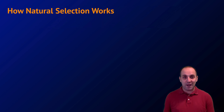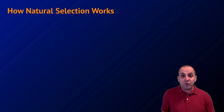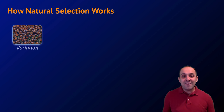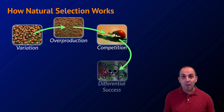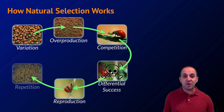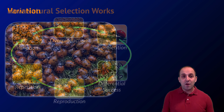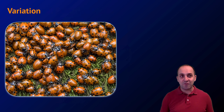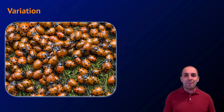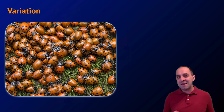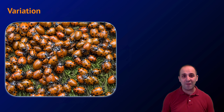Natural selection is not a complicated process. It's based on some of the most obvious characteristics of life already evident to anyone who thinks about them. I like to think of natural selection as a cycle — something that repeats from generation to generation — and I've broken it down into six steps. The first is variation among all living things. It's probably obvious that every member of every generation is unique in some ways. Here's a picture of some ladybugs and you can see that each one has slight or even not-so-slight differences in their coloration and the pattern of spots.